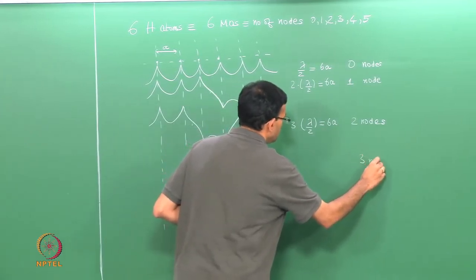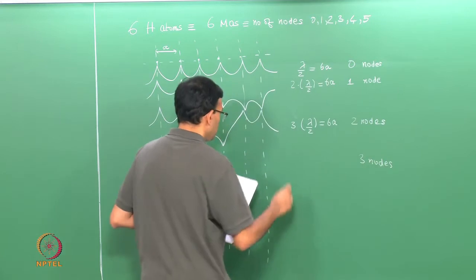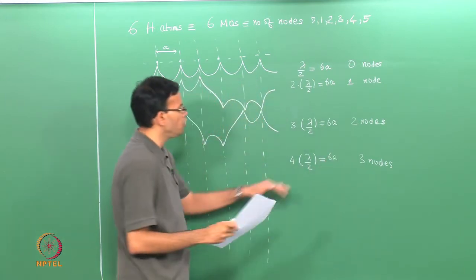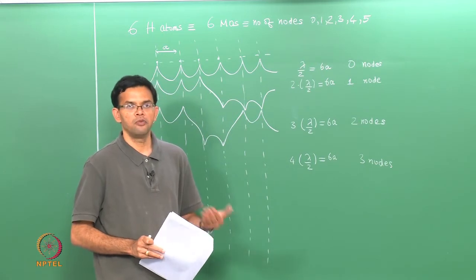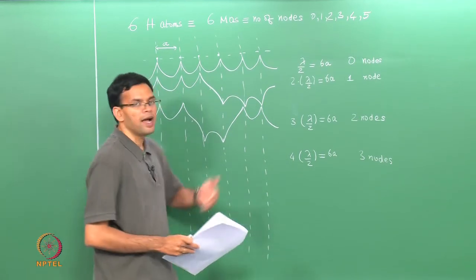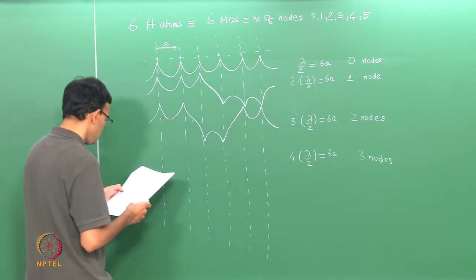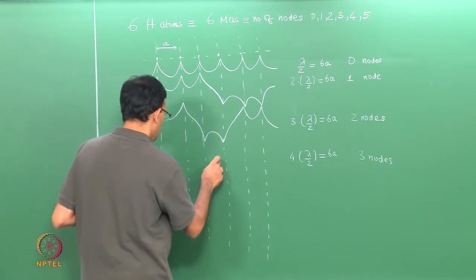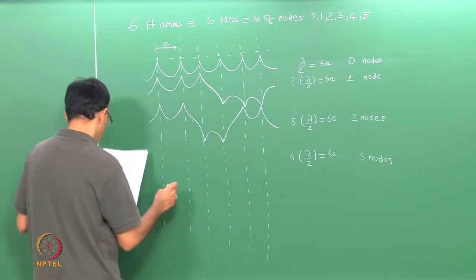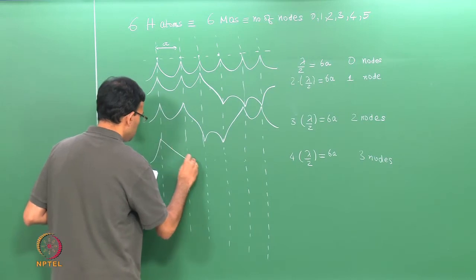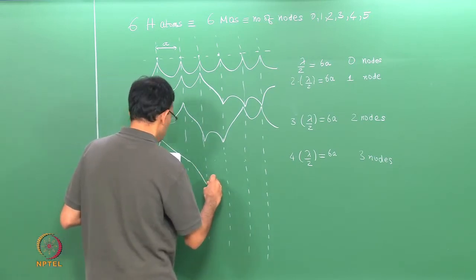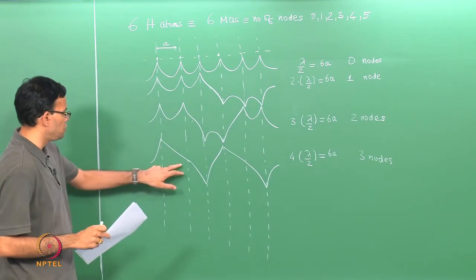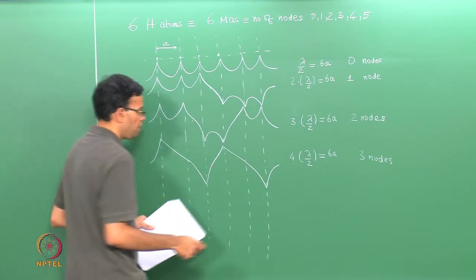For 3 nodes, you have one node here, the next node in between, and the next node here - so 1, 2, and 3 nodes. Then we have 4 nodes, where 5 × lambda/2 = 6a. The nodal positions are slightly more complicated to draw, but once you have the nodal positions you can draw the wave functions.